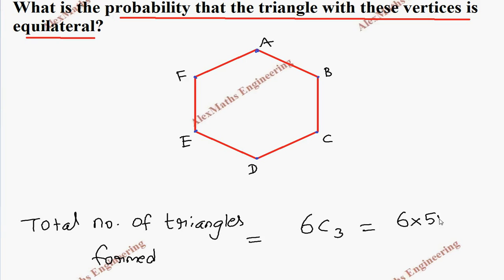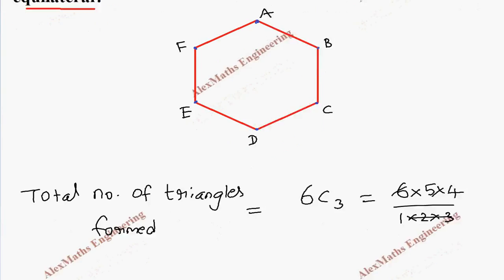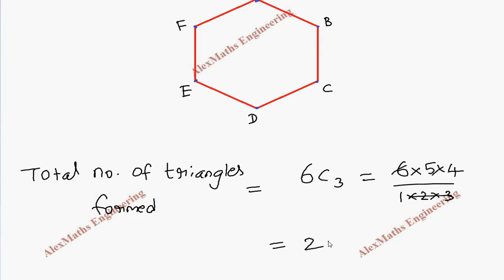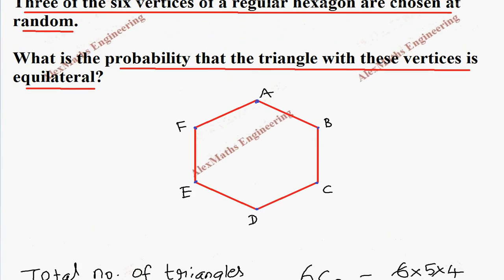So it is 6 into 5 into 4 divided by 1 into 2 into 3. There are 20 triangles can be formed using any 3 points chosen from the 6 points.